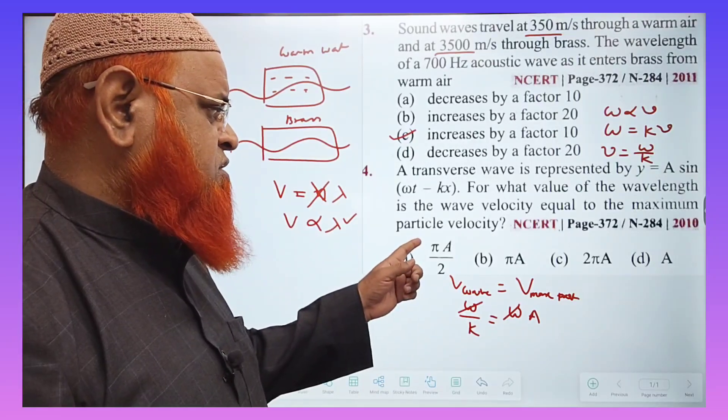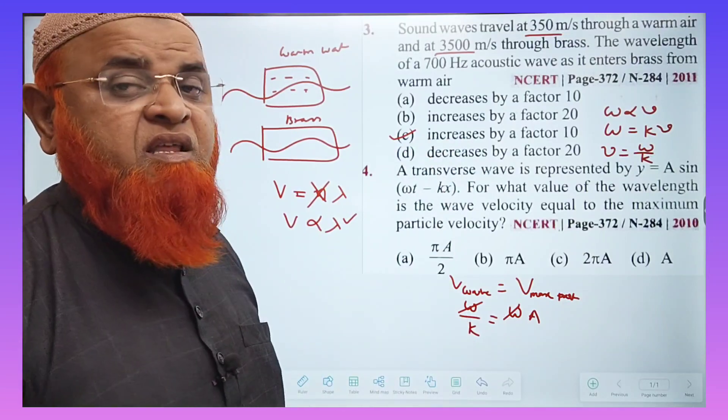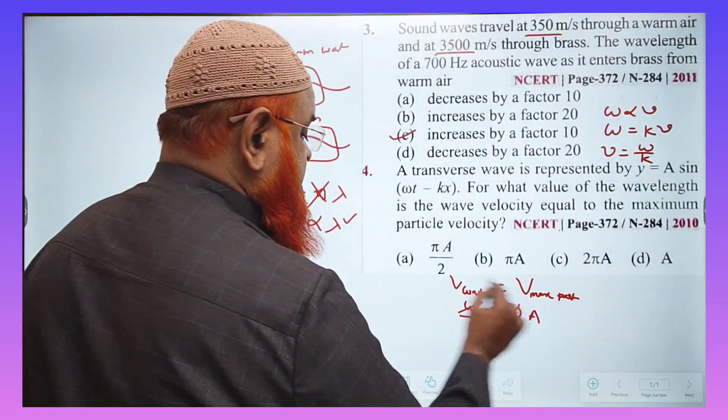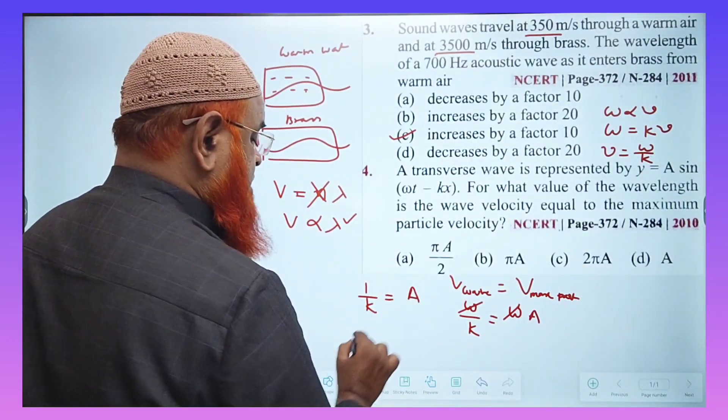And what is he asking us to find out? He is asking us to find out the value of wavelength. How are you going to find out the value of wavelength? You can just see what is left here now. 1 by k is equal to A.